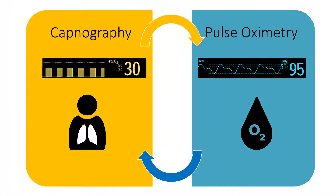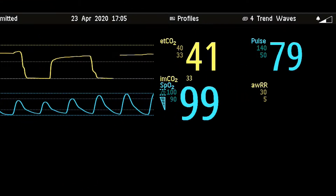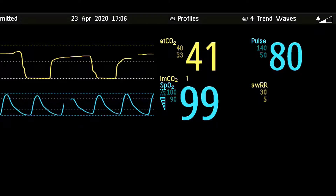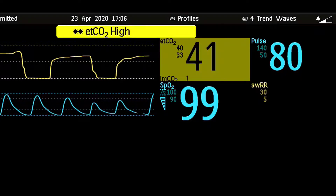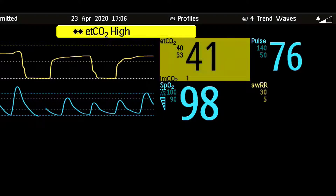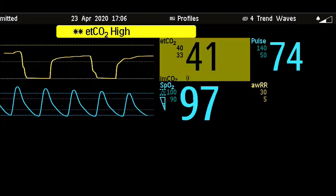Whereas SpO2 measures the oxygenation status of a patient, CO2 reflects primarily the ventilation status, but also the metabolic and circulatory state of a patient. As a concrete example, hypoventilation or an apnea will be detected immediately with capnography, while with SpO2 you'll get a delayed detection.